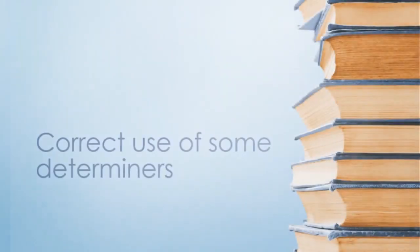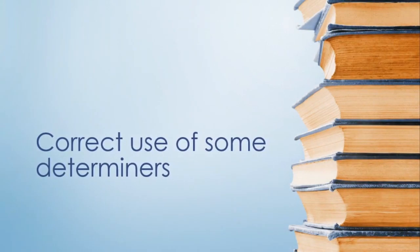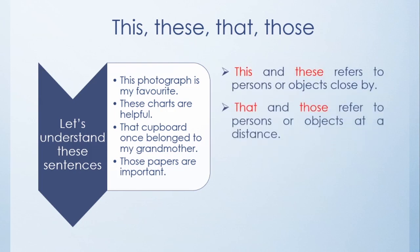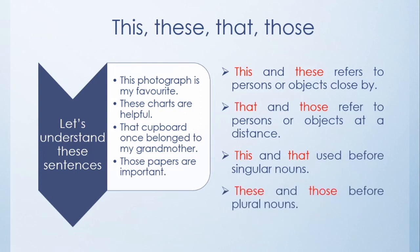In this video, we will learn the correct use of some determiners. This, these, that, those are demonstratives. This and these refer to objects which are close by, near you — for example: 'This photograph is my favorite.' That and those refer to objects which are at a distance — for example: 'That cupboard once belonged to my grandmother. Those papers are important.'